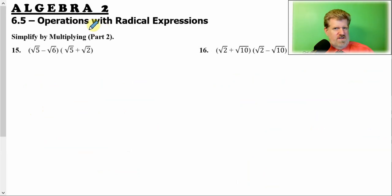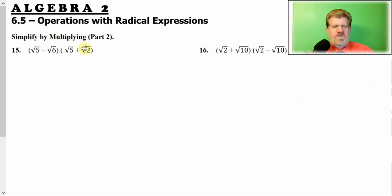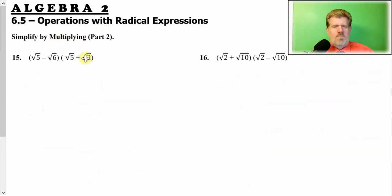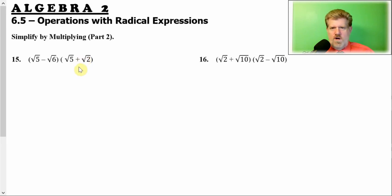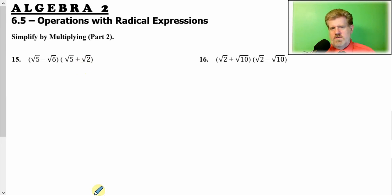Now it's a little different — what do you notice here? It is a binomial times a binomial. Now, the word I don't like, one of those bad F-words: FOIL. I shouldn't say it's bad; I just like to call it the distributive property. But to each their own. So we do everything in here, multiply by everything in here.